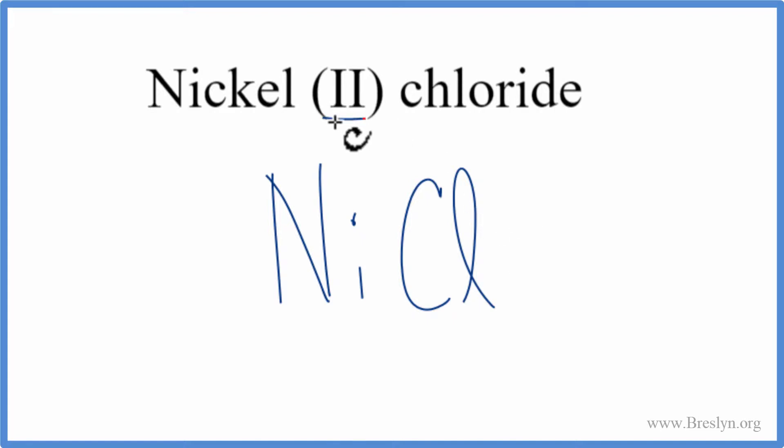So nickel, it tells us right here, is two. This Roman numeral two tells us it has a two plus ionic charge. It's a transition metal. Chlorine on the periodic table has a one minus ionic charge. So these don't add up to zero, but we can change the subscripts here to make that happen.